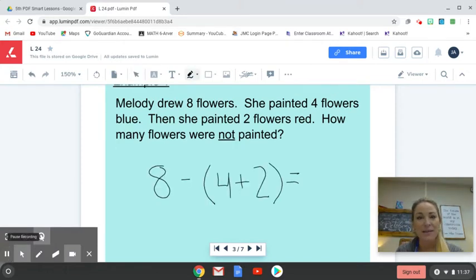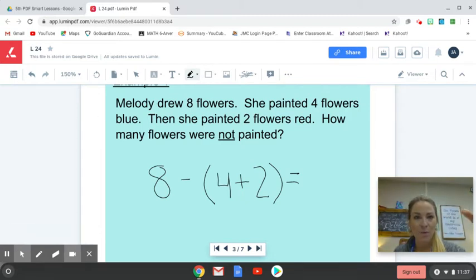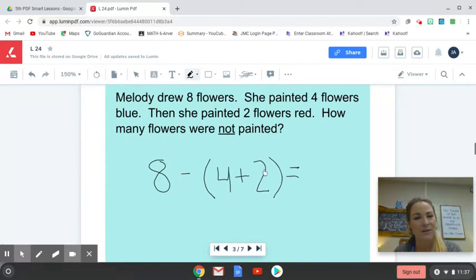All right, so here you can see I've just set up the equation, and I've just basically taken what was in word form and dropped it down into a written equation. So Melody drew 8 flowers. There's my 8. From that, it doesn't say this up here, but from that I know that she painted 4 flowers blue and 2 red. So that's what I'm associating together. That information is associated together. I'm going to put that within parentheses. So from those 8 flowers, she painted 4 blue and 2 red. So now their final question is how many flowers were not painted. All I have to do is solve this equation.